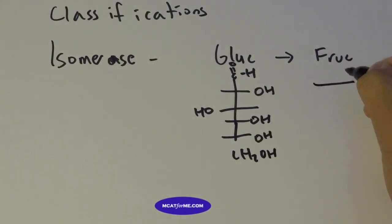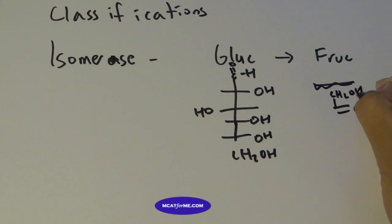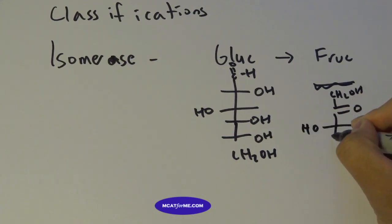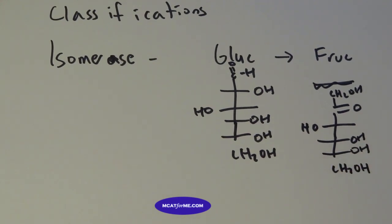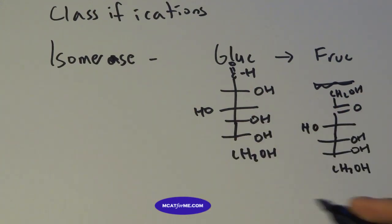And fructose actually will look like this. So the same chemical formula but just different structures. So isomerase will convert between a glucose and a fructose.